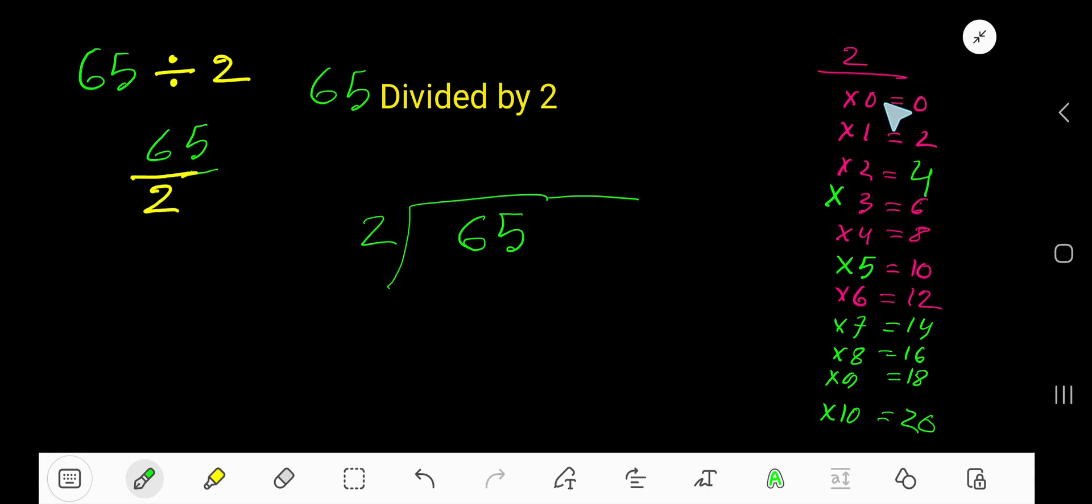Look, to find the multiplication table of 2, just add 2 with the previous step. 0 plus 2, 2. 2 plus 2, 4. 4 plus 2, 6. 6 plus 2, 8.